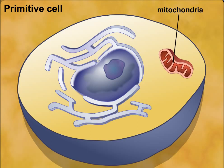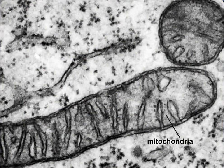According to the theory, energy-producing bacteria may have been engulfed by a larger primitive cell and come to reside within it, eventually evolving into what we now know as mitochondria.